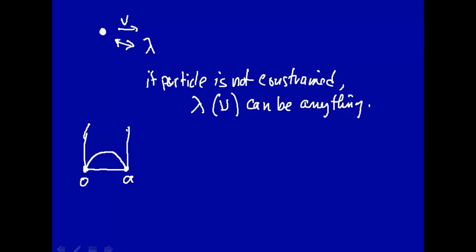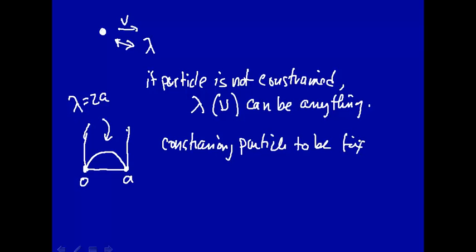This wavelength will be twice the length here, a, so the wavelength here will be 2a, so if we go to 2a we make a complete wave. And again, we're constraining the particle to be fixed at the ends of the one dimensional box.